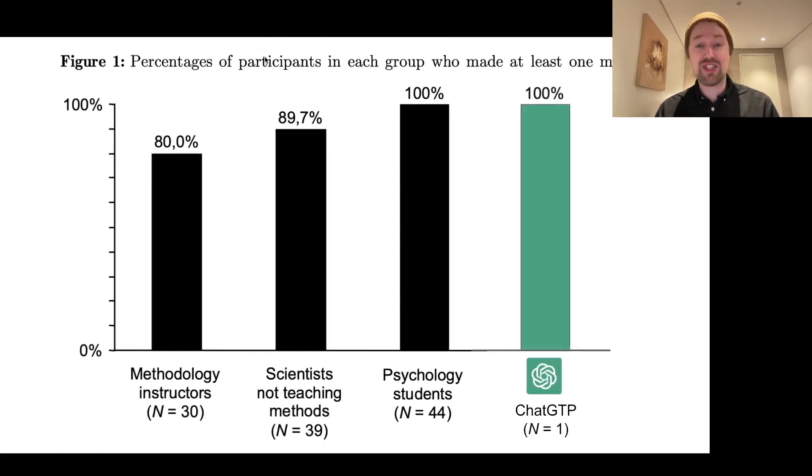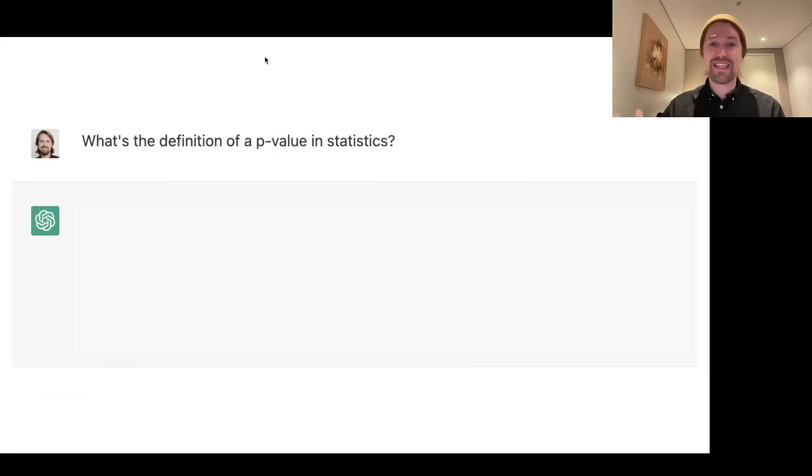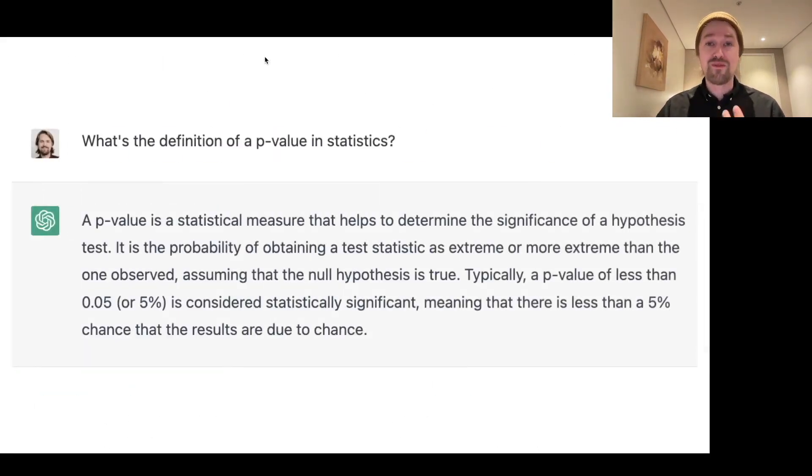And this is the general pattern when I've poked at this further. So, ChatGPT trained on a huge corpus. It has learned all the right things that people write and say about p-values. But unfortunately, it seems like it has also learned all the wrong things that people say and write about p-values. So, for example, if you just ask it about the definition of a p-value, it will say a lot of right things. It will say that it's the probability of obtaining a test statistic as extreme or more extreme than the one observed. Correct things and so on. But it will also say nonsense like there is a less than a five percent chance that the results are due to chance.